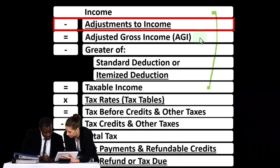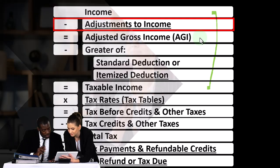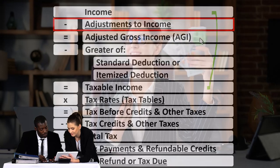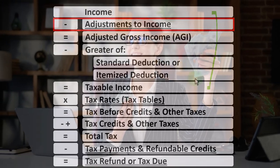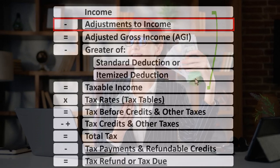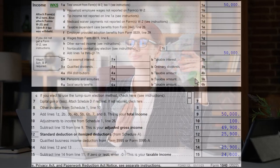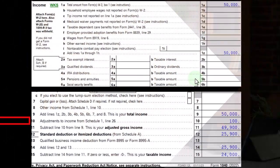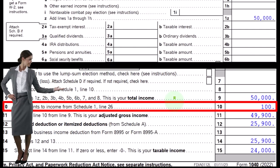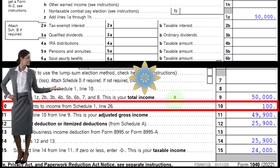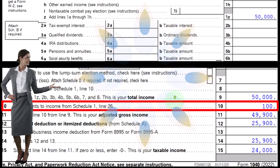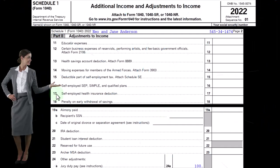Note that there's no hurdle we typically need to clear with the Adjustments to Income, as opposed to the hurdle we need to clear when doing itemized deductions — that hurdle being the standard deduction. When we're looking at the first page of Form 1040, we're focused on the Adjustments to Income from Schedule 1, and on Schedule 1 page 2, we're down here on the Jury Duty pay line.